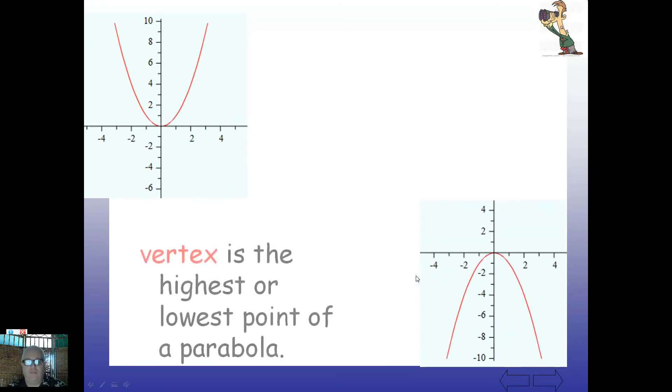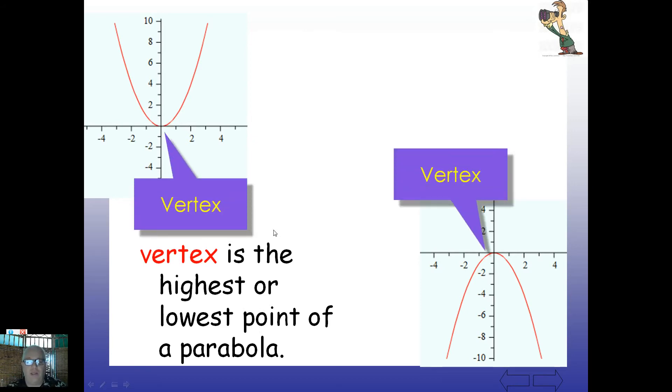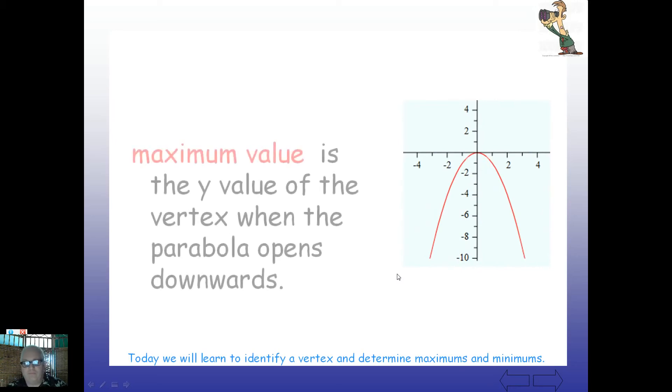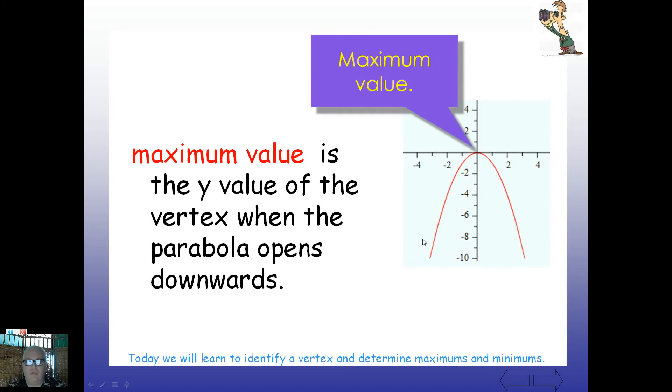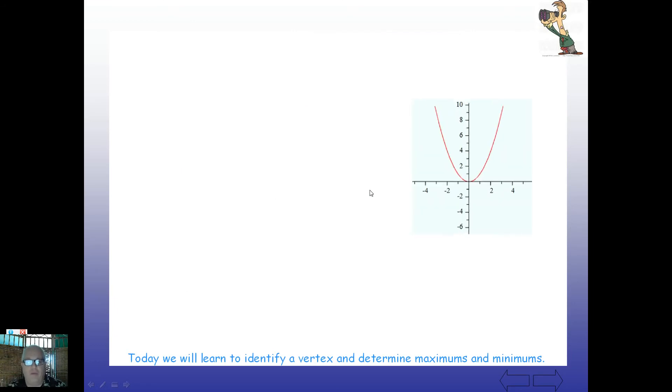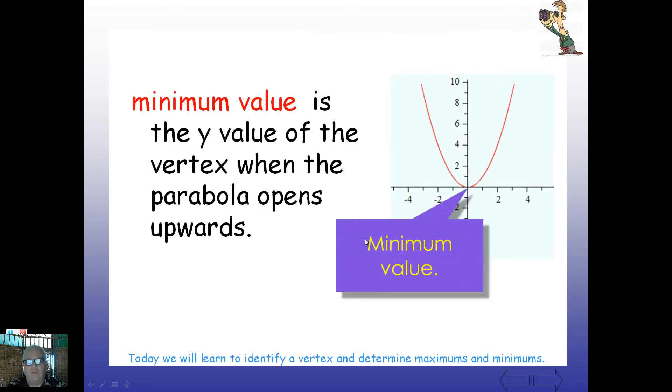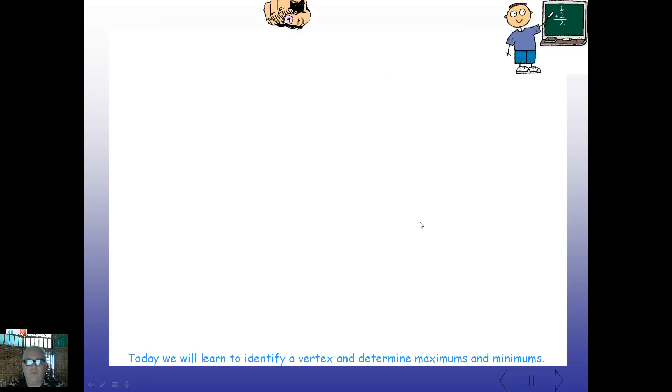So let's take a look at these. The vertex is the highest or lowest point on a parabola, just like your vocabulary word showed you. So here's our vertex here and here. The lowest point on this one that opens upward and the highest point on the one that opens downward. The maximum value is the y value of the vertex when the parabola opens downward. So the vertex is here, and we call that a maximum value, high point of the parabola. And of course, the minimum value then would be the vertex for the parabola that opens upward.